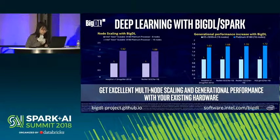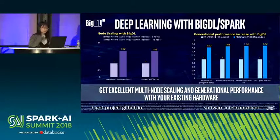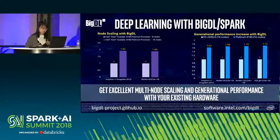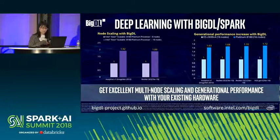BigDL achieves excellent multi-node scaling and generational performance improvements with existing hardware. The left chart shows node scaling: there is up to 92% increase in throughput going from 8 nodes to 16 nodes. The right chart shows generational performance: up to 72% increase in throughput when running on the latest Intel Scalable Processors compared to previous generations.